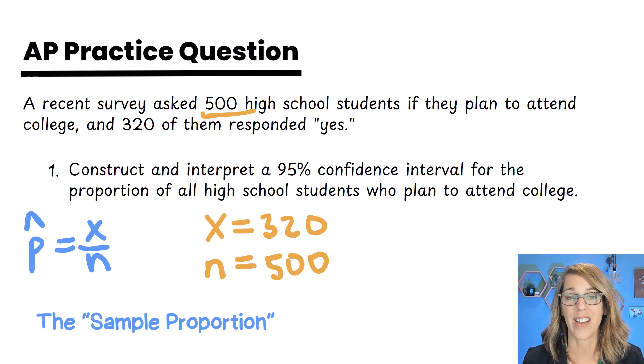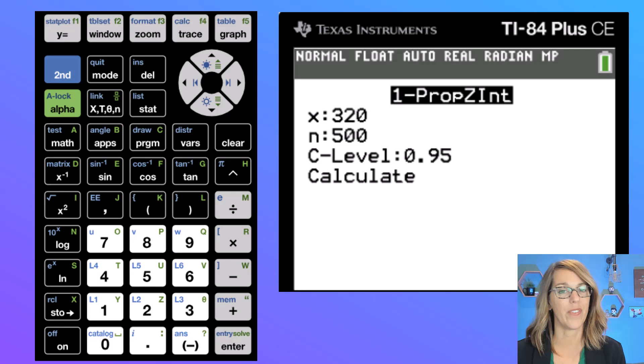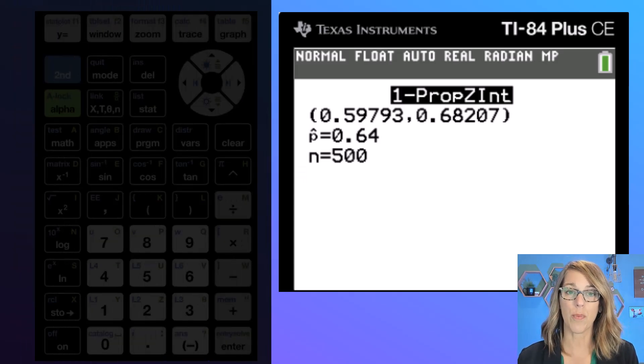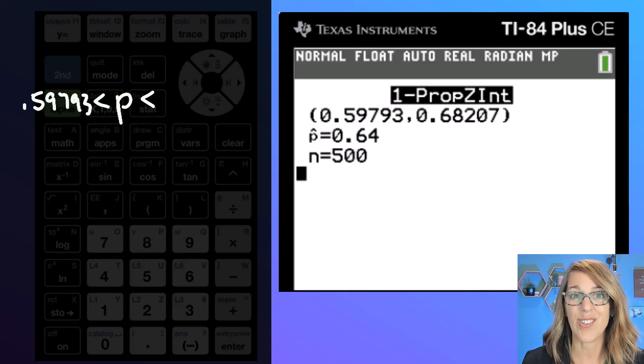We can get those right into the calculator so x is 320, n was 500, and I do want that confidence level of 0.95 and then I'll hit calculate. This is going to give me the interval that says that the true proportion with 95% confidence is between 0.59793, about 59.7%, and 0.68207, or about 68.2%.